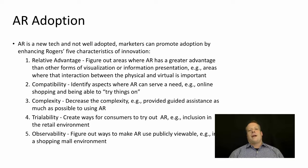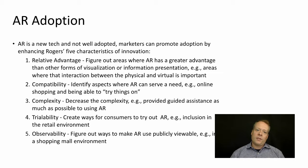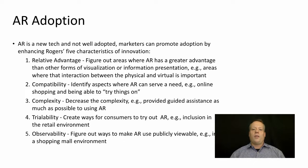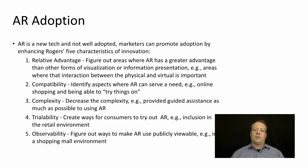The real question is that augmented reality is new tech and not well adopted. Marketers can promote adoption by enhancing Rogers' five characteristics of innovation from his Diffusion of Innovations book. Relative advantage says that products are more likely to be adopted if their advantage over alternatives is greater — so you need to find areas where AR has a greater advantage than other forms of visualization. Furniture placement for Wayfair is a great example, because it's really hard to have any other way to get you to visualize that. Compatibility means you need to identify aspects where augmented reality serves a need compatible with what users need right now — online shopping and being able to try things on is a great example of this.